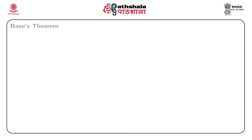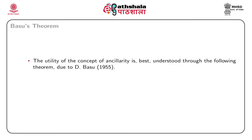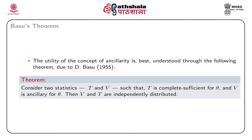Next we consider a very important theorem due to Basu in the year 1955, popularly known as Basu's theorem. Consider two statistics T and V such that T is complete sufficient for θ and V is ancillary for θ. Then V and T are independently distributed.